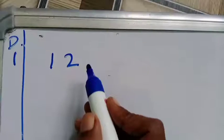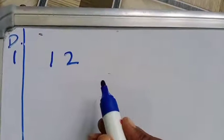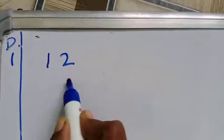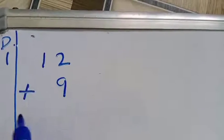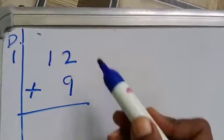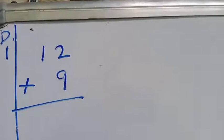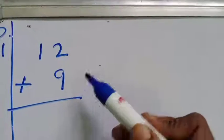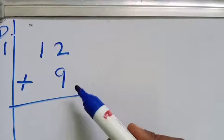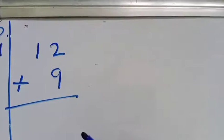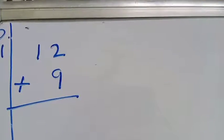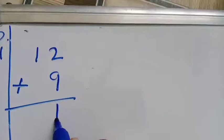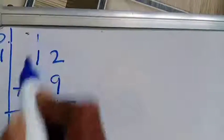Now let's write the digits. Suman has 12 chocolates and her mother gave 9 more chocolates. We need to add these. This is the 1's place and this is the 10's place. 9 is the greater number and 2 is the smaller number, so keep 9 in mind and 2 in your hand. After 9: 10, 11. So we write 1 here and carry over 1.